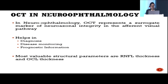In neuro-ophthalmology, OCT represents a surrogate marker of neuro-axonal integrity in the afferent visual pathway. It helps in diagnosis, disease monitoring, and prognostication — we can tell patients what their prognosis will be based on OCT parameters. The most valuable structural parameters measured are RNFL thickness and ganglion cell layer thickness.